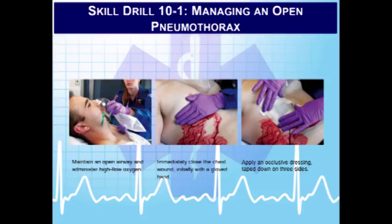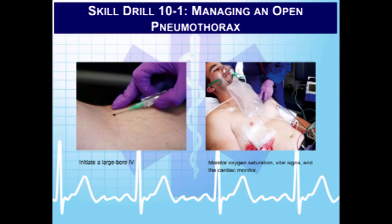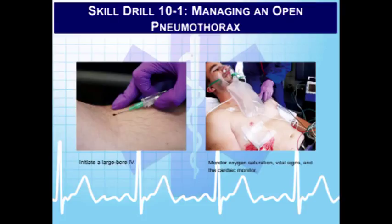Management includes maintaining an open airway, high flow oxygen, immediately placing a gloved hand on the wound, then applying an occlusive dressing taped on three sides — which acts as a flutter valve. Establish large bore IVs, as there are often other serious injuries. Monitor vital signs, mentation, ECG, and oxygen saturation. If intubated, monitor end-tidal CO2. Assess and watch for development of a tension pneumothorax requiring needle decompression. Discuss with the sending physician whether a chest tube should be placed before transport, and if it's already in place, monitor it carefully for function and blood accumulation.